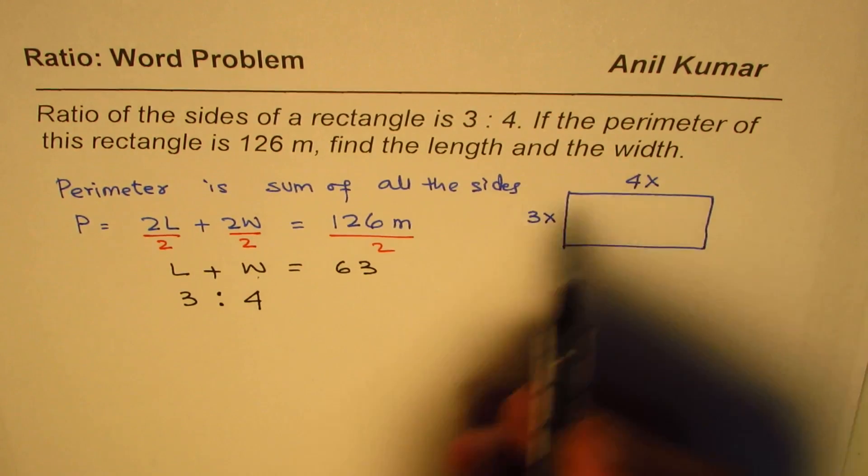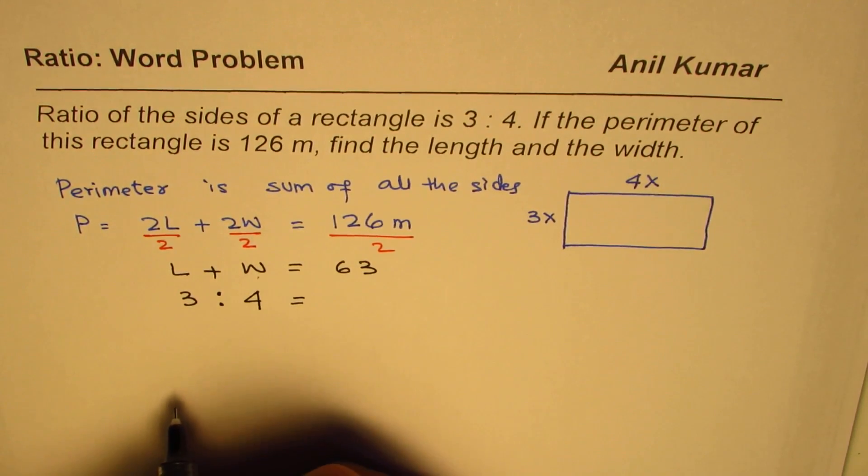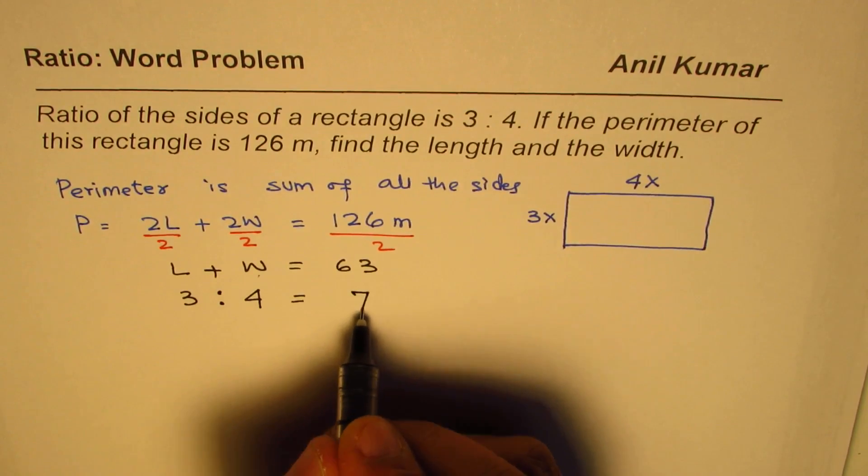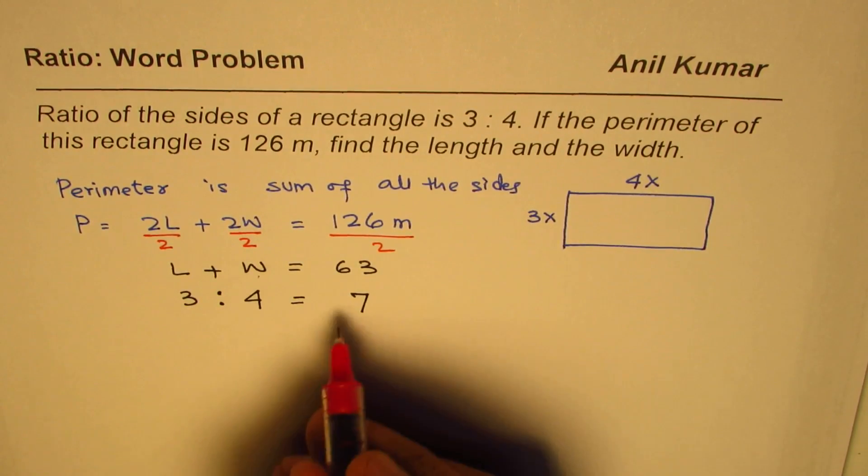Now, if the ratio is 3 is to 4, you also see 3 plus 4 is how much? 3 plus 4 is 7. That is to say, let's try to understand this.